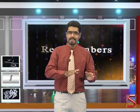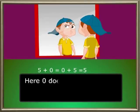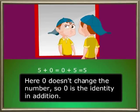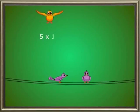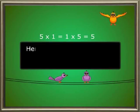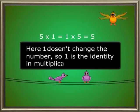The identity is that number which, on performing any operation with it, does not change the value of the original number. 5 + 0 = 0 + 5 = 5, so 0 does not change the number — therefore 0 is the identity element for addition. In multiplication, 5 × 1 = 1 × 5 = 5, so 1 does not change the number — therefore 1 is the identity element for multiplication.